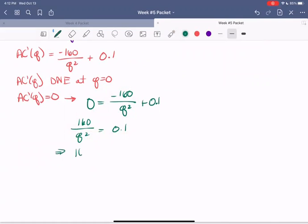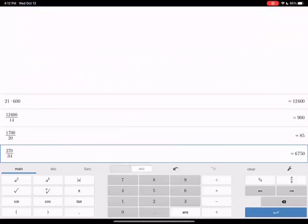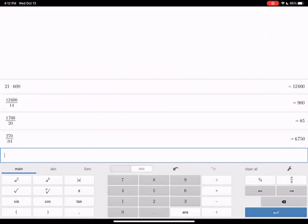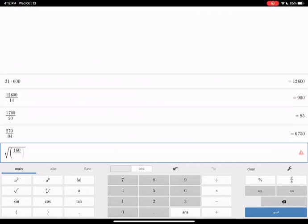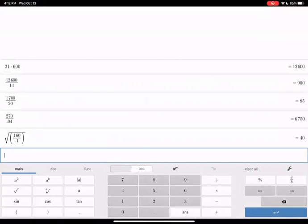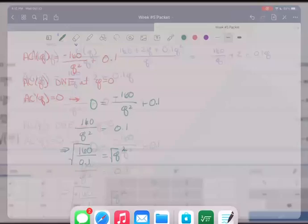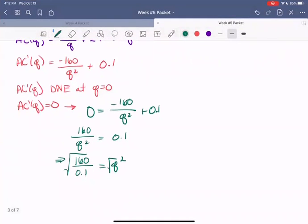So that means that we're getting 160 over 0.1 equals Q squared. And so now we need the square root of both sides. So we can consult our calculator here. So I'm going to get a new line. And I want square root of 160 divided by 0.1. And enter. So we are getting 40.